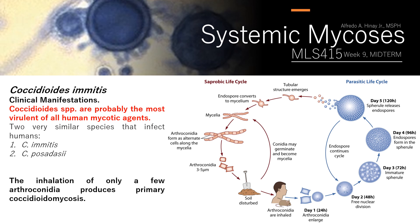Next is Coccidioides imitis. The Coccidioides species are probably the most virulent of all human mycotic agents. If asked in a quiz or exam about the biosafety level requirement for Coccidioides species, the answer is Biosafety Level 3. There are two forms that can infect humans: Coccidioides imitis and Coccidioides posadasii. Even inhalation of only a few arthroconidia can produce primary coccidioidomycosis.